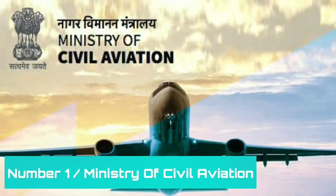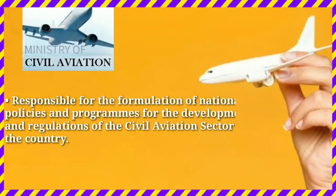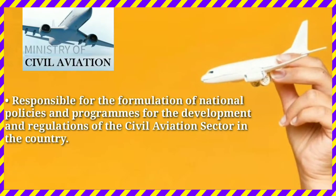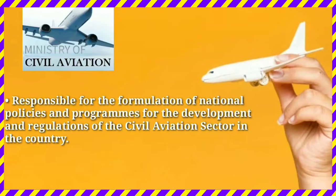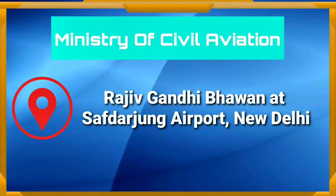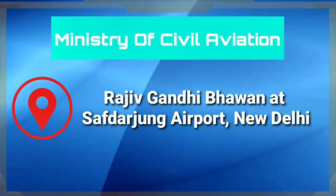Number one is Ministry of Civil Aviation. The Ministry of Civil Aviation is responsible for the formation of national policies and programs for development and regulation of the civil aviation sector in the country. The Ministry of Civil Aviation office is located at Rajiv Gandhi Bhavan at Safdarjung Airport in New Delhi. The Ministry of Civil Aviation of Government of India is a nodal ministry involved in the growth and development of civil aviation in India.